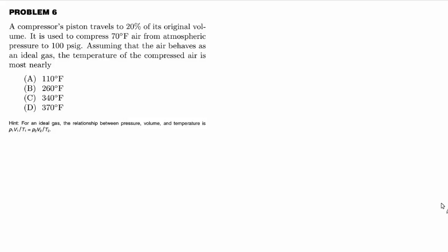A compressor's piston travels to 20% of its original volume. It is used to compress 70 degree air from atmospheric pressure to 100 psi gauge. Assuming that the air behaves as an ideal gas, the temperature of the compressed air is most nearly what?